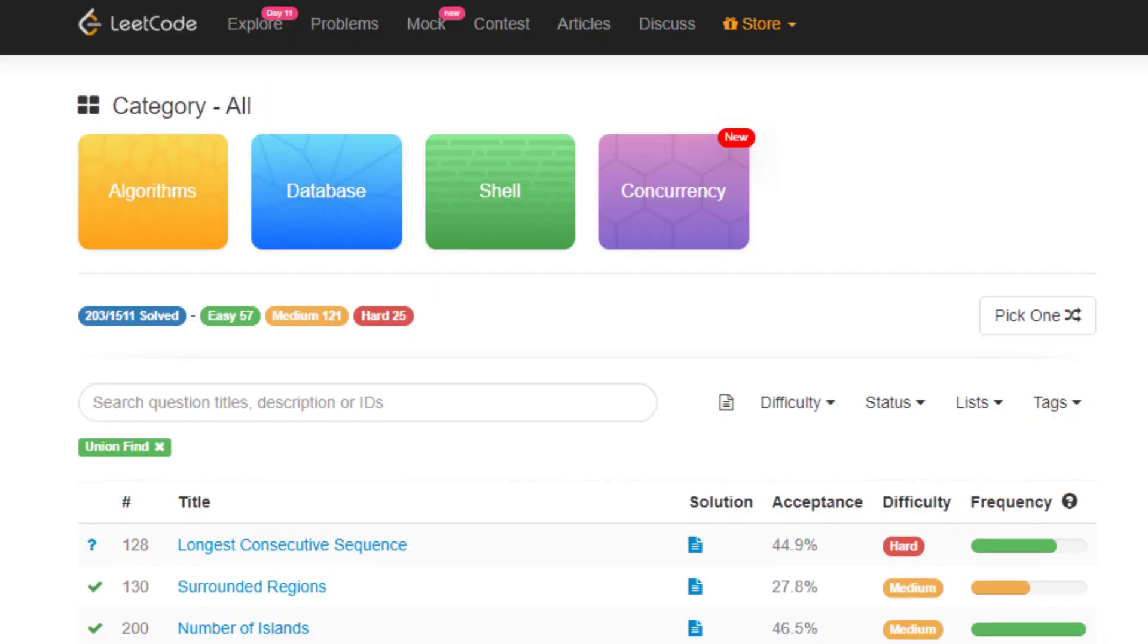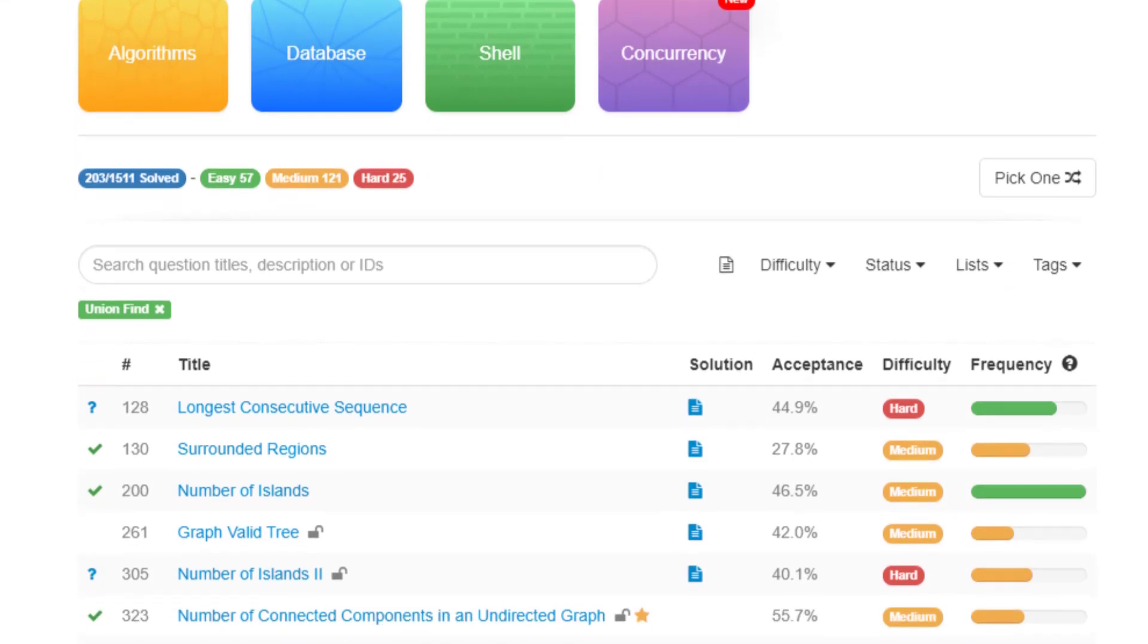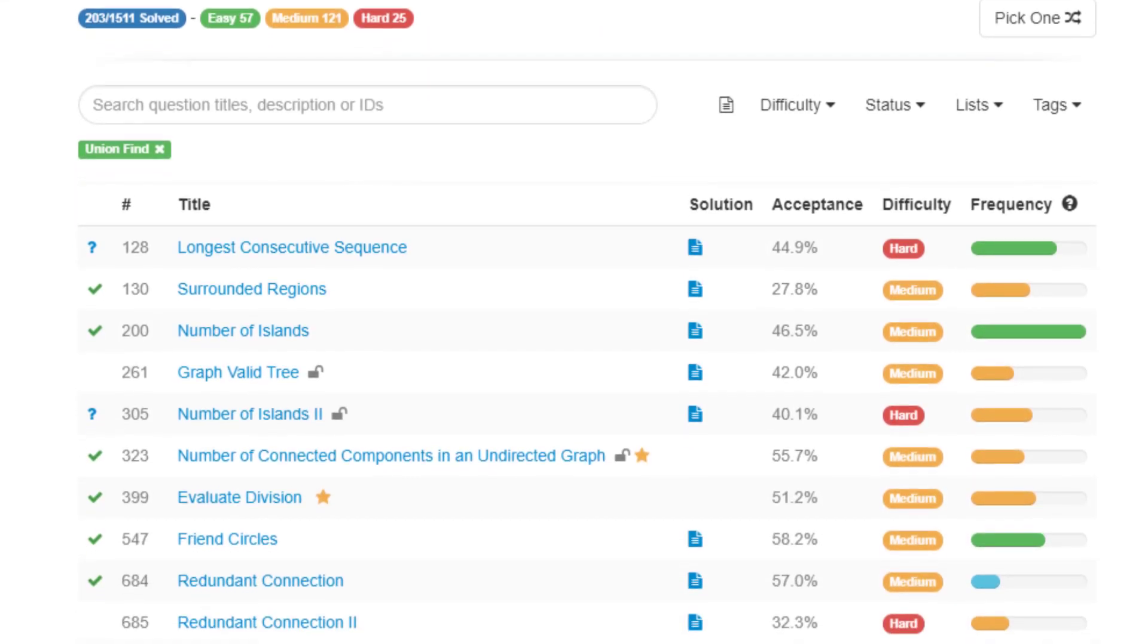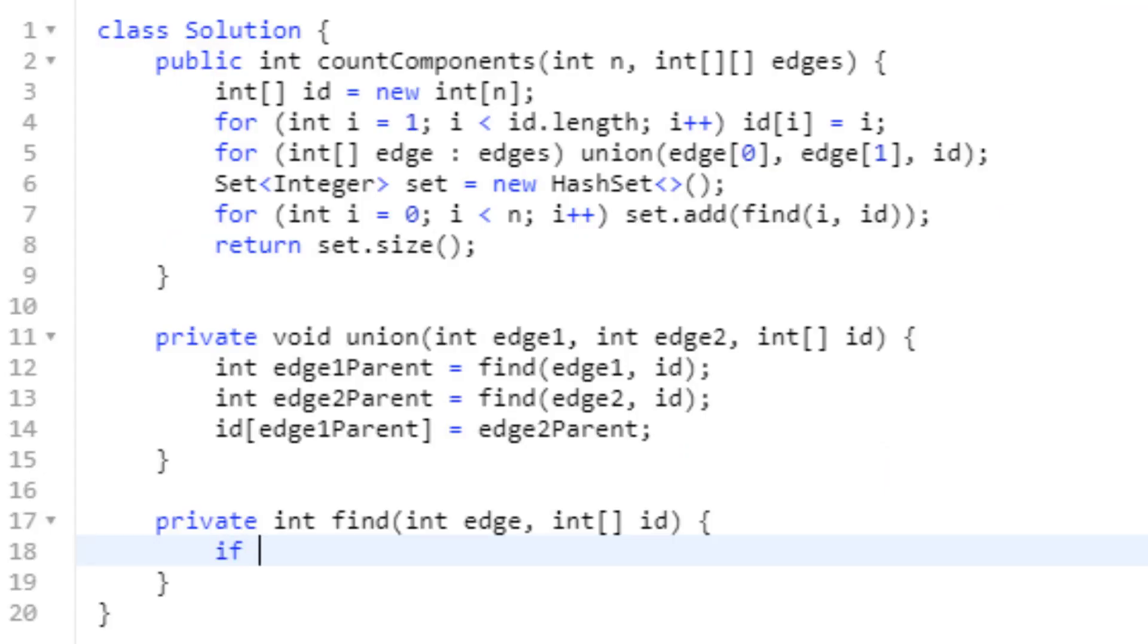Well, this data structure can be used to solve a bunch of different interview problems. Some of the most common interview problems that you've seen, like number of islands, friend circles, number of connected components in an undirected graph, accounts merge, and a bunch of other ones. All of these can be solved with the disjoint set data structure.